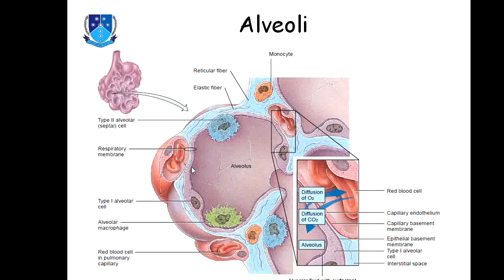This is a single alveolus. You can see that capillaries go all around the alveolus, and where there is a capillary the wall of the alveolus is very thin — this is where the exchange of carbon dioxide and oxygen takes place. There are also a large number of macrophages in each alveolus, responsible for engulfing any foreign material. The blood supply and perfusion are very high in each alveolus.